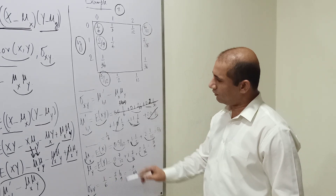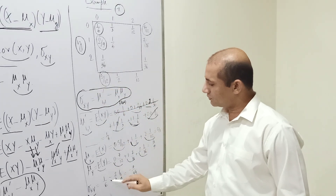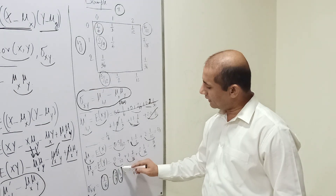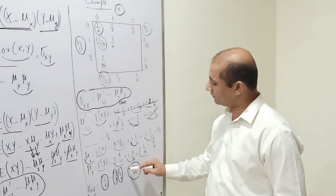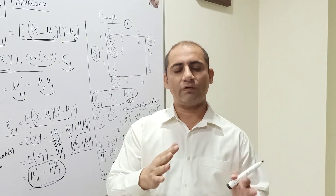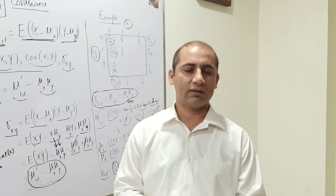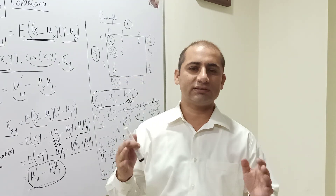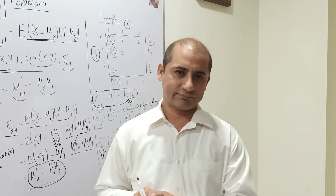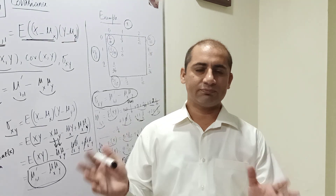Applying the formula sigma_{xy} = mu_{1,1}' − mu_x * mu_y: we have 1/6 − (2/3)*(4/9) = 1/6 − 8/27 = −7/54. The covariance is negative, confirming that as the number of aspirin tablets increases, the number of sedative tablets tends to decrease — these two variables are negatively correlated. As data tables grow larger, different software is needed to perform these computations, but the concept of covariance remains essential.